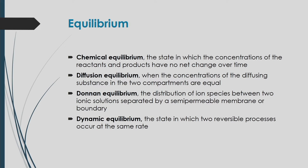Before going to the phase diagram representation, we should discuss different types of equilibrium found in chemical engineering processes. Chemical equilibrium is a state in which the concentrations of reactants and products have no net change over time. Diffusion equilibrium occurs when the concentrations of diffusing substances in two components become equal.